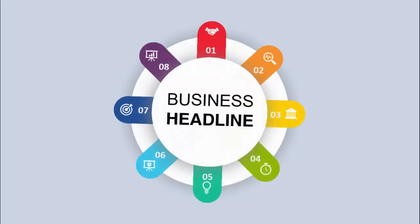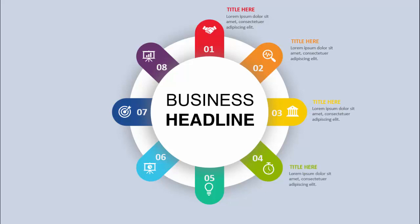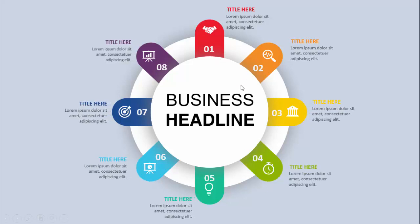In today's tutorial I'm going to show you how to create a rectangular options infographic slide in PowerPoint. When you click, you can see eight different options with different colors. In the center you can add your headline, and for each option you can add an icon, a title, and detailed text.